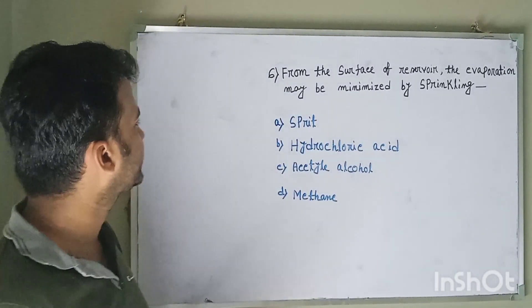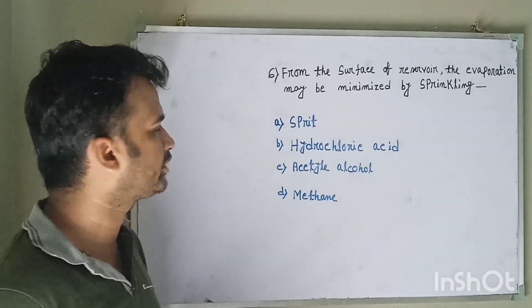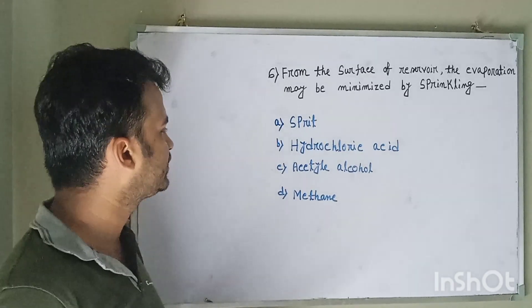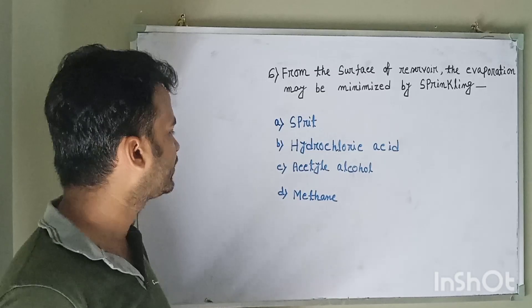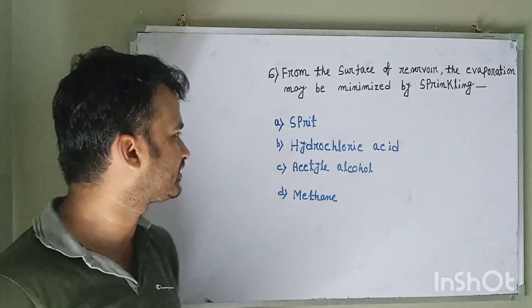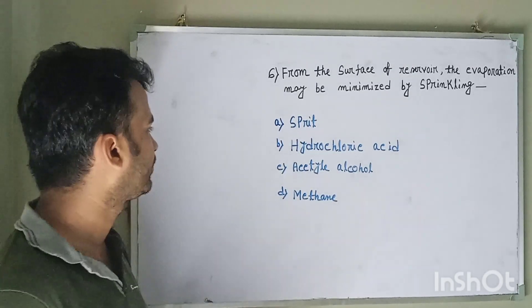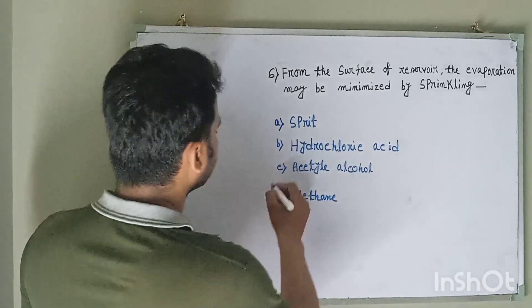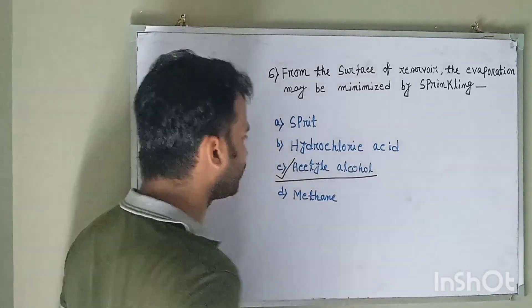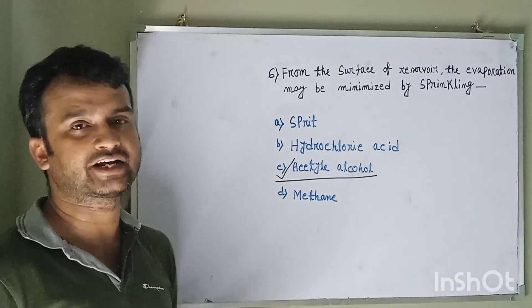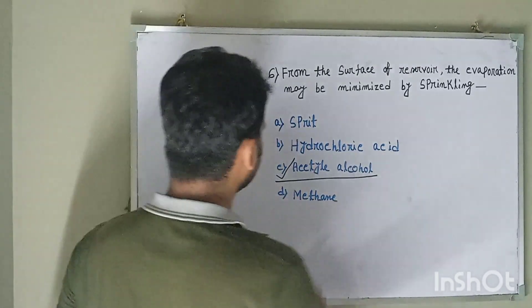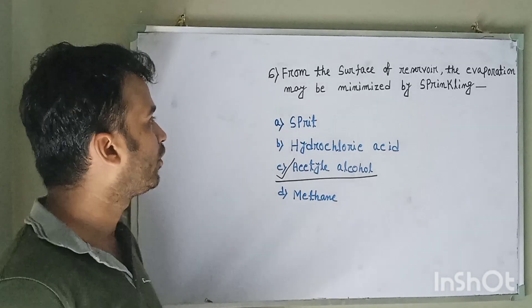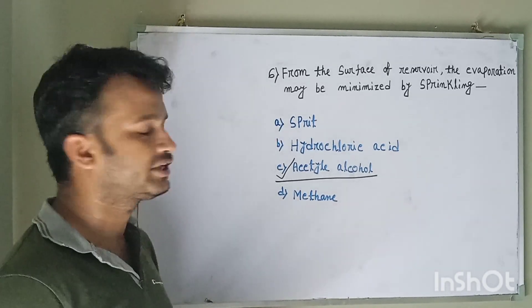Question number six: From the surface of reservoir, the evaporation may be minimized by sprinkling option A spirit, option B hydrochloric acid, option C acetyl alcohol, option D methane. The correct answer is acetyl alcohol. This is also known as hexadecanol. If we sprinkle some acetyl or hexadecanol on the reservoir, then the evaporation can be minimized.